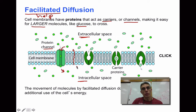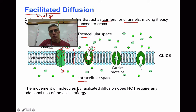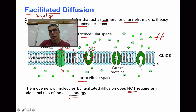Something interesting about protein channels is that they are very specific to the type of molecule they help through the membrane. Particular molecules can only pass through their matching channel. The movement of molecules by facilitated diffusion does not require any additional use of the cell's energy — it's still considered diffusion, still going from an area of high concentration down to an area of low concentration.